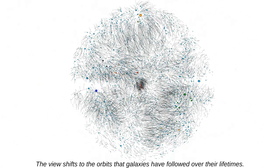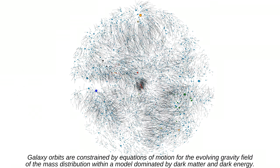The view shifts to the orbits that galaxies have followed over their lifetime. Galaxy orbits are constrained by equations of motion for the evolving gravity field of the mass distribution within a model dominated by dark matter and dark energy.